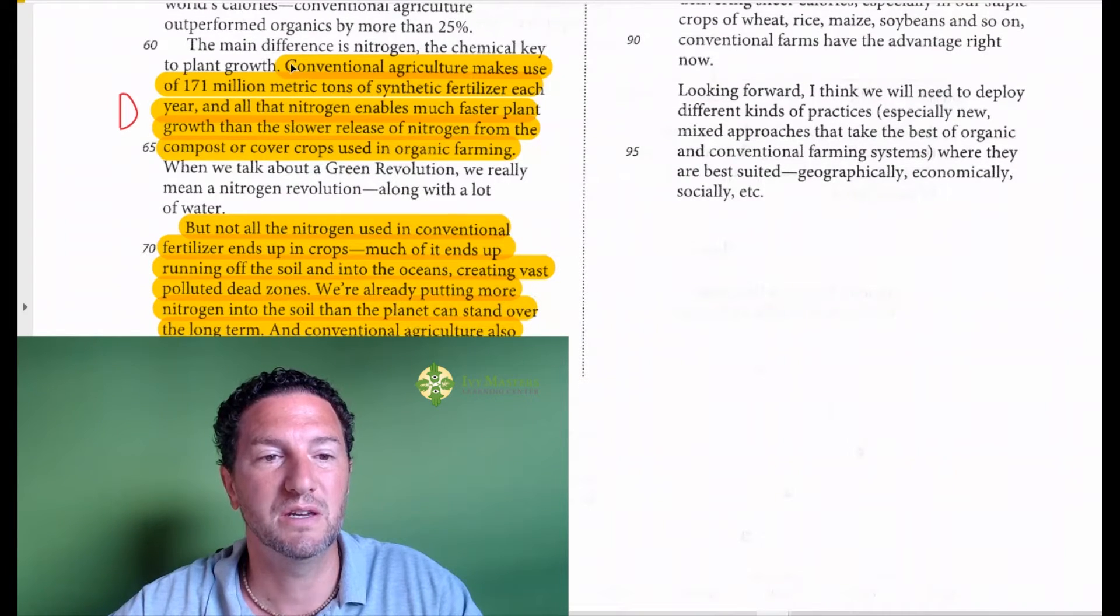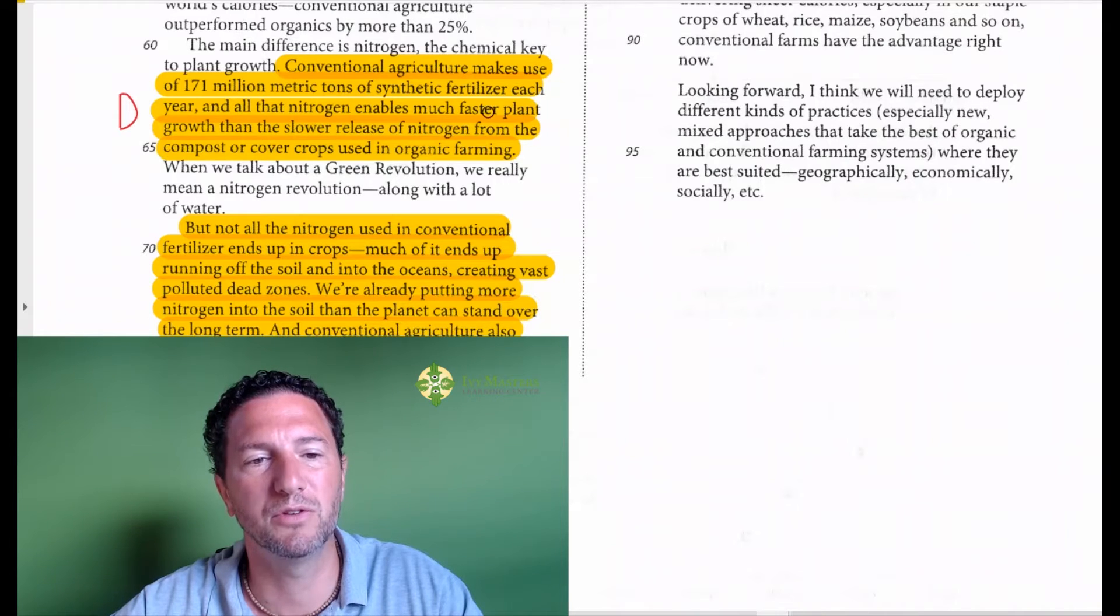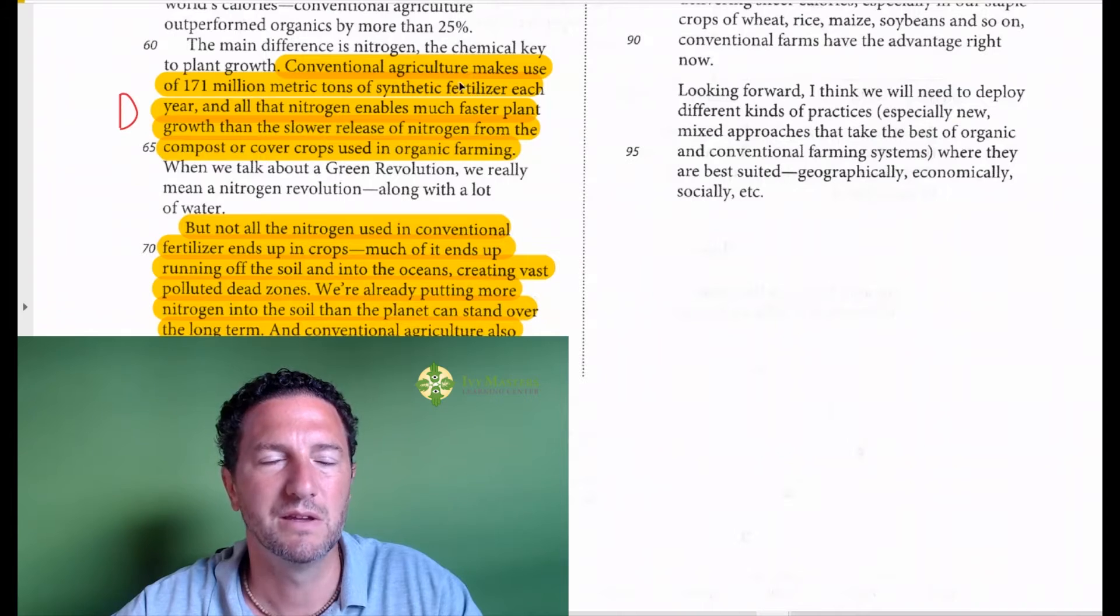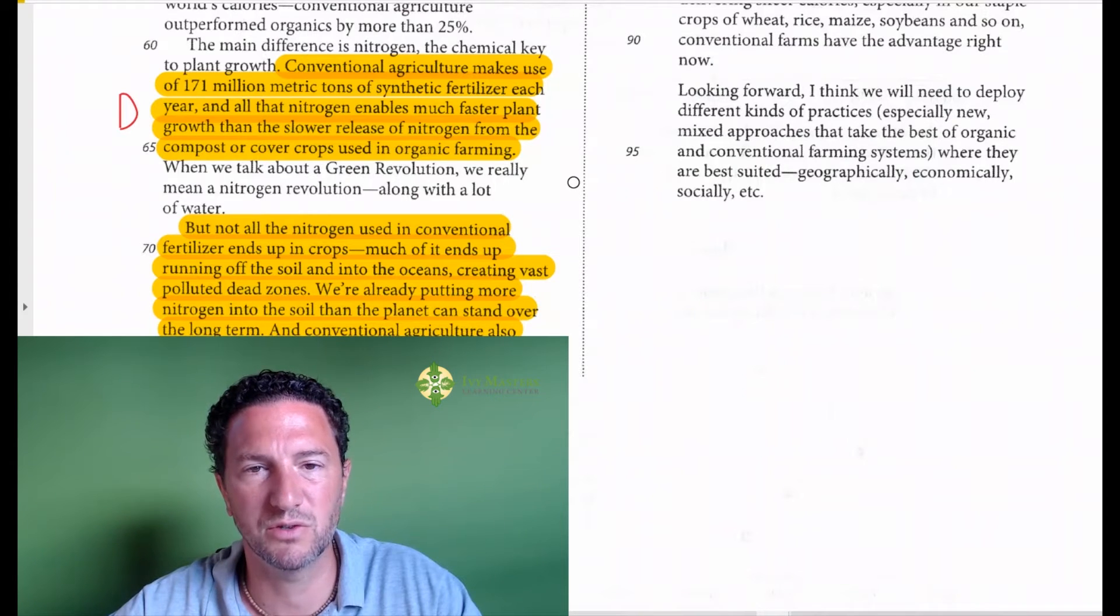Answer choice D: conventional agriculture makes use of 171 million metric tons of synthetic fertilizer each year. And all the nitrogen enables much faster plant growth than the slow release of nitrogen from the compost or cover crops used in organic farming. So here we see the relationship between organic and conventional as well.